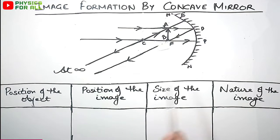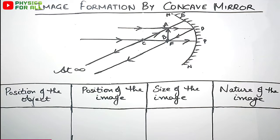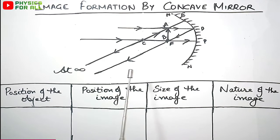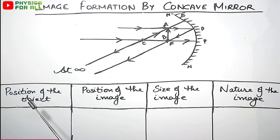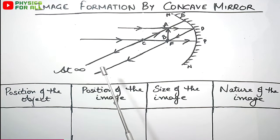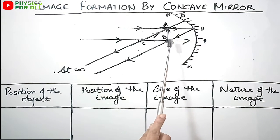Now extending these two reflected rays, we see they are not going to intersect here. They may intersect at a very far away point — at infinity. So the image would be formed at infinity. This is totally opposite to the first case: there, object was at infinity and image formed at focus; here, object is at focus and image forms at infinity.